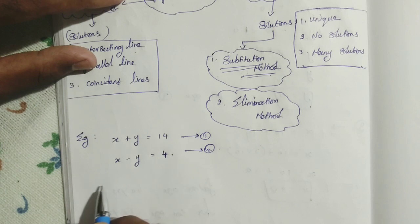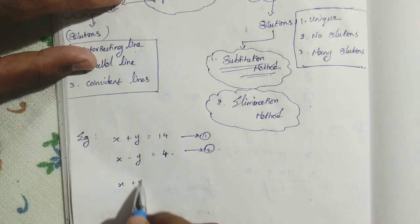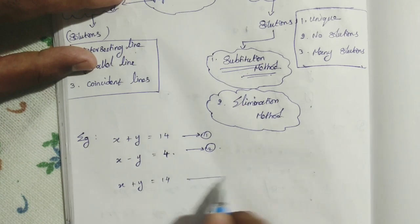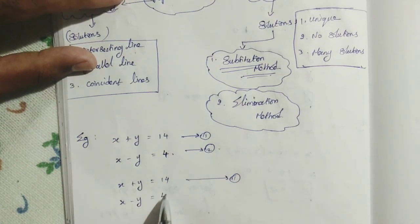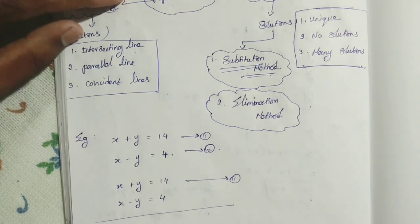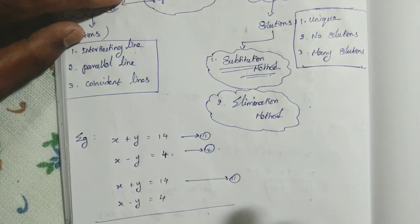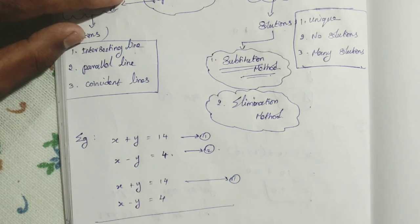Now write the solution. We write equation 1: x plus y equals 14, and equation 2: x minus y equals 4. The elimination method means removing — we remove the x term or y term, whichever is convenient. The condition is that through addition or subtraction we can remove the terms. Here, when we add the two given equations, we can easily cancel the minus y and plus y.